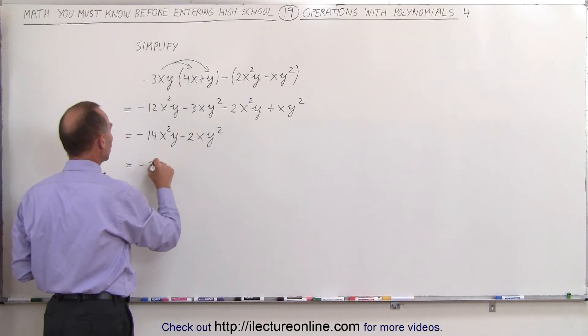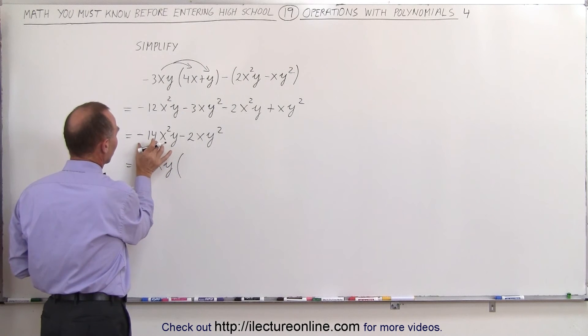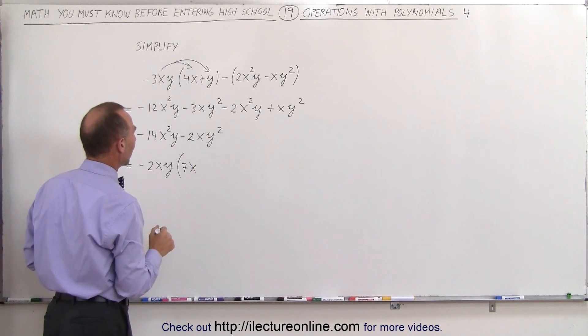This is equal to minus 2xy times the quantity. If we factor out a minus 2, we have a remainder of 7. Factor out an x, we have an x. And the y is factored out.